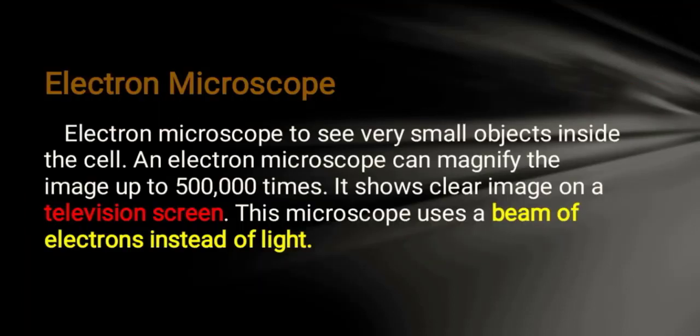Electron microscope: we use the electron microscope to see very small objects inside the cell that we cannot see with the light microscope. An electron microscope can magnify the image up to five lakh times and it shows a clear image on a television screen. This microscope uses a beam of electrons instead of light.